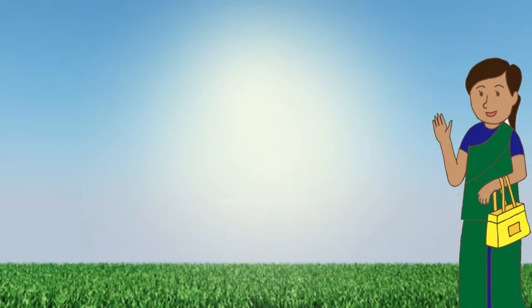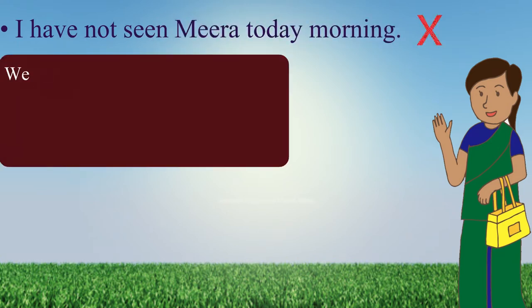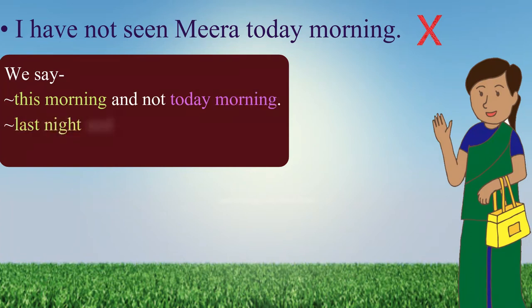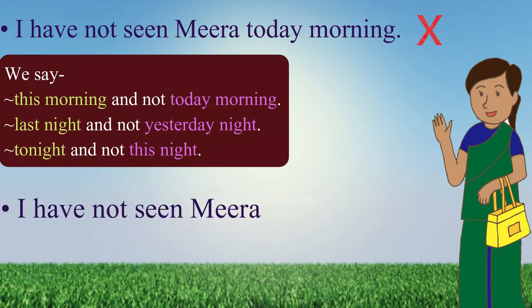The first one is: 'I have not seen Meera today morning.' Please note, we say 'this morning' and not 'today morning.' Last night and not yesterday night. Tonight and not this night. Now repeat the correct sentence after me: I have not seen Meera this morning.